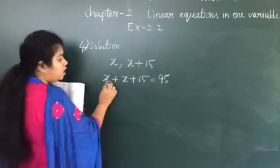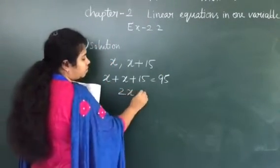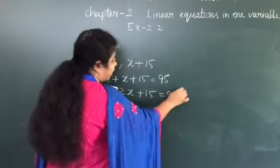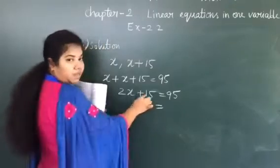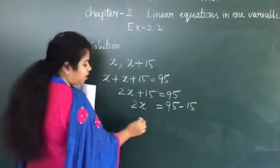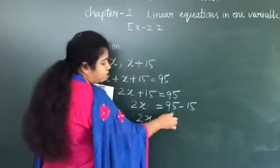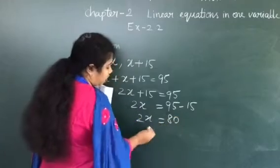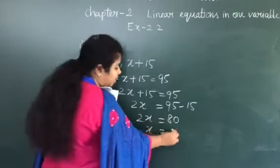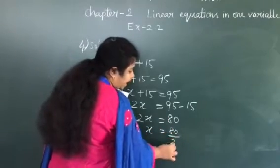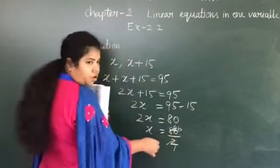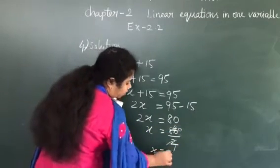So x plus x plus 15 equals 95. x plus x is 2x, so 2x plus 15 equals 95. When plus 15 moves to the right-hand side it becomes minus 15. So 2x equals 95 minus 15, which is 80. This 2 is in multiplication, so when it goes to the right-hand side it becomes division. x equals 80 divided by 2, which is 40.